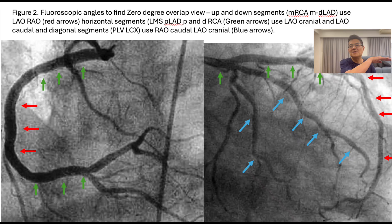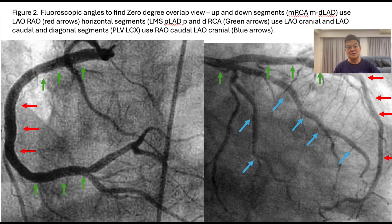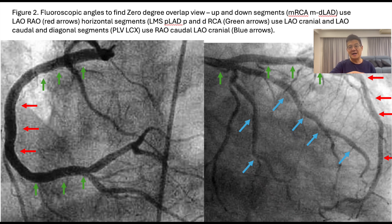If in LAO and RAO the vessel is going horizontal — proximal RCA, distal RCA, proximal LAD, left main — then go cranial and caudal. For RCA, that would be LAO cranial and LAO caudal. For left main and LAD, the best view to see them horizontal is in RAO, so RAO cranial and RAO caudal. If you see in LAO and RAO the vessel going diagonally, as in the circumflex OM, go LAO cranial and RAO caudal. If it goes diagonally the other way, like the PLV, then opposite: LAO caudal and RAO cranial. Very simple.